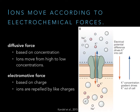These ions will move in accordance with two forces. The first is the diffusive force, which is based on concentration — random motion brings ions from areas of high concentration to low. So sodium and chloride will want to rush in, and potassium will want to rush out, based on the diffusive force, summarized by the blue arrow in this illustration. The orange arrow is the electrical force or electromotive force, based on the ion's charge. The neuron has a negative membrane potential, so sodium and potassium are pulled in and chloride is pushed out.